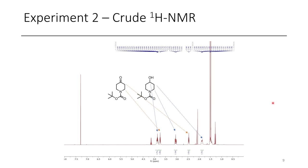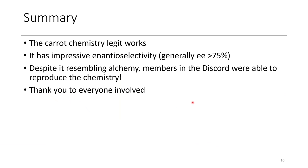So this chemistry does work. Surprisingly, you can take carrots and take ketones, literally just mix them in water without any other fancy reagents, and it will slowly reduce the ketones to secondary alcohols — which is absolutely astonishing. The carrot chemistry legit works; it has impressive enantioselectivity. This type of EE is actually pretty decent compared to a lot of contemporary methods that use super fancy reagents and catalysts. And despite the fact that this greatly resembles alchemy, members of the Discord were able to prove it's reproducible chemistry. It would be great to see this developed to quantitative conversion and even higher EEs, but given that carrots are used as the reagent — who cares? Just push material. Carrots are everywhere.